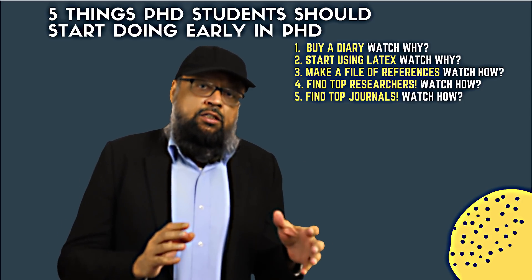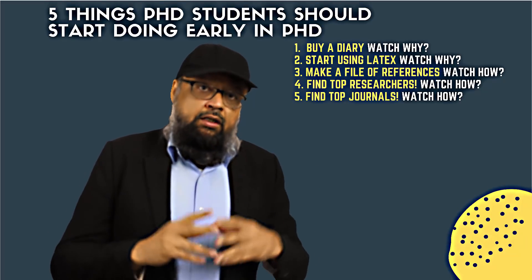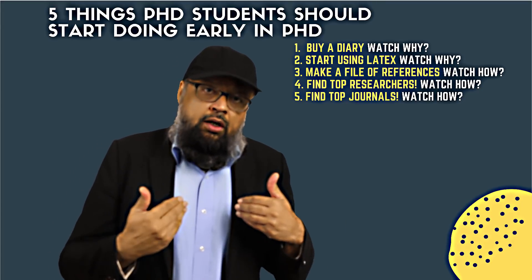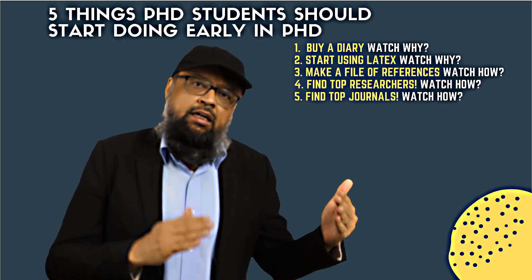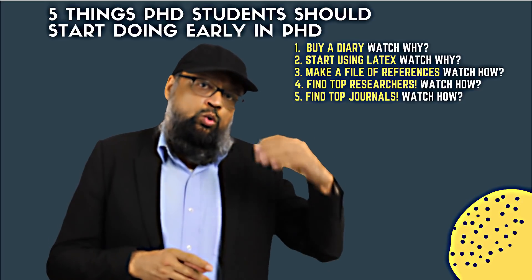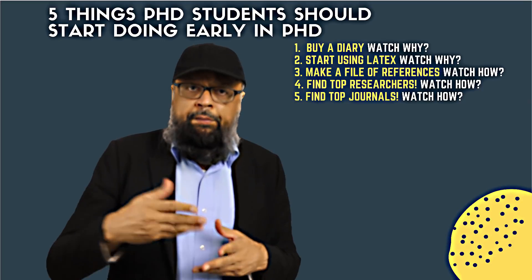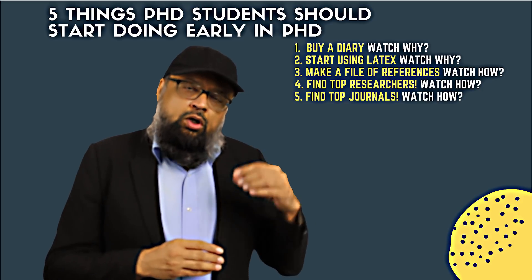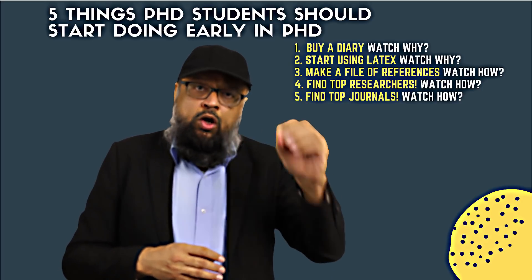The final thing is to find the top journals in your field — not only the top journals, but also the journals in which you can publish. On my small diary, I have made a page where I have selected 15 to 20 journals with impact factors from 0.2 to 5. This is a good range in which good PhD students should be able to publish. Remember: a conference paper, however valuable it might be, has zero worth when you apply for a professor or lecturer position.